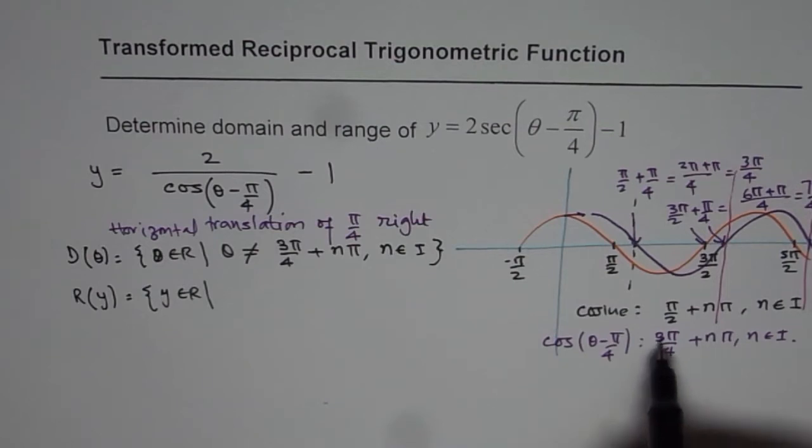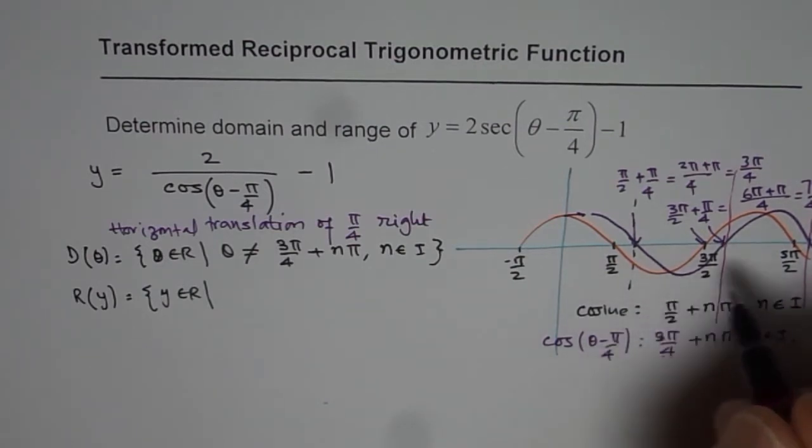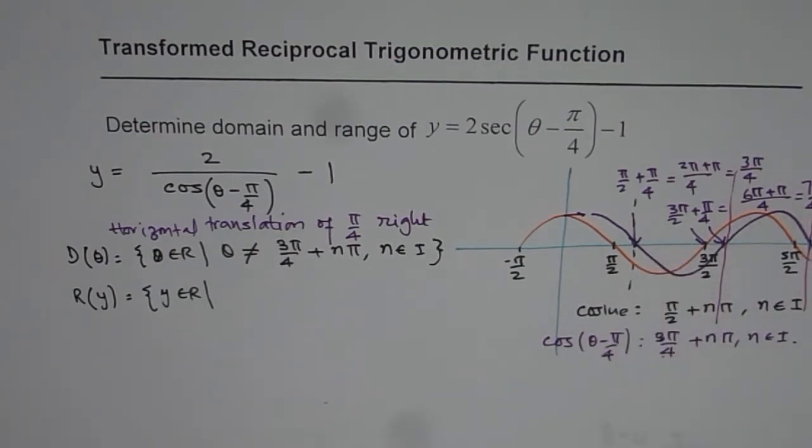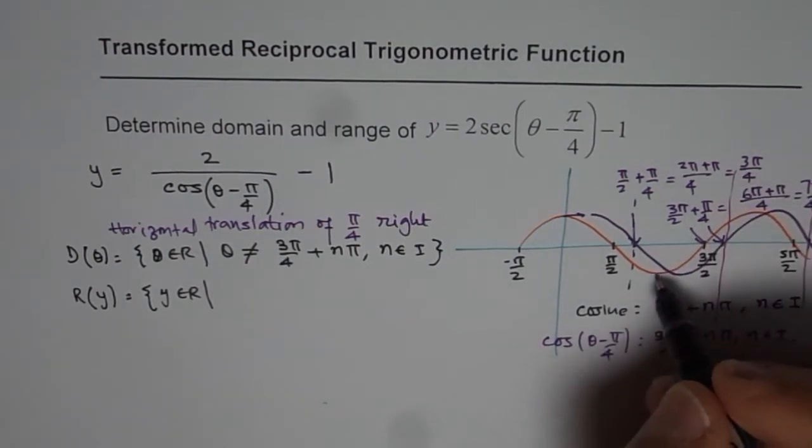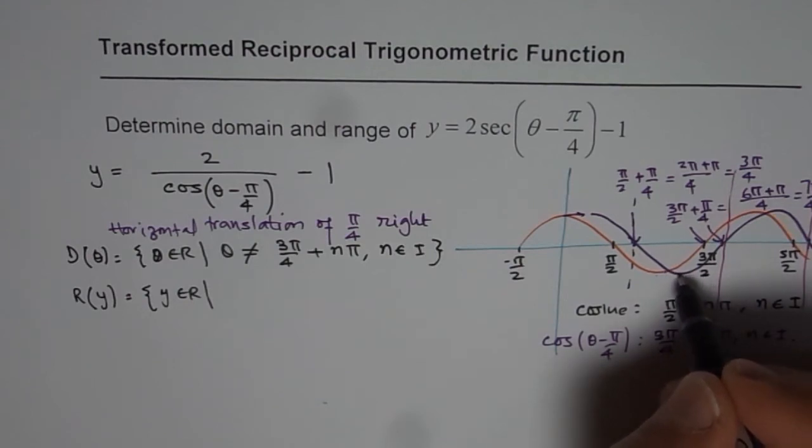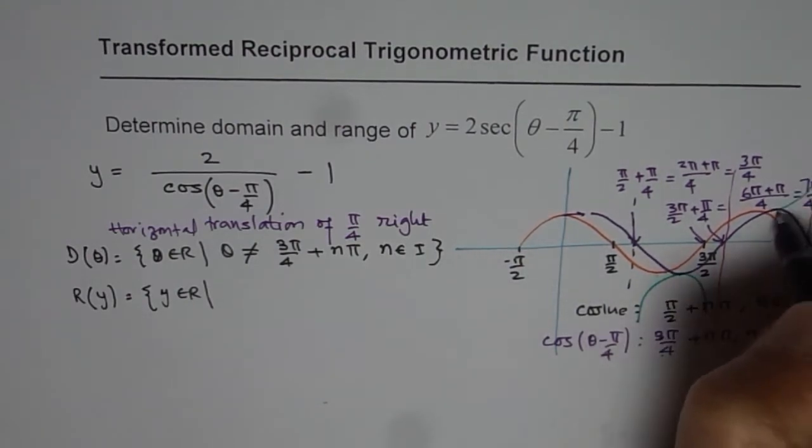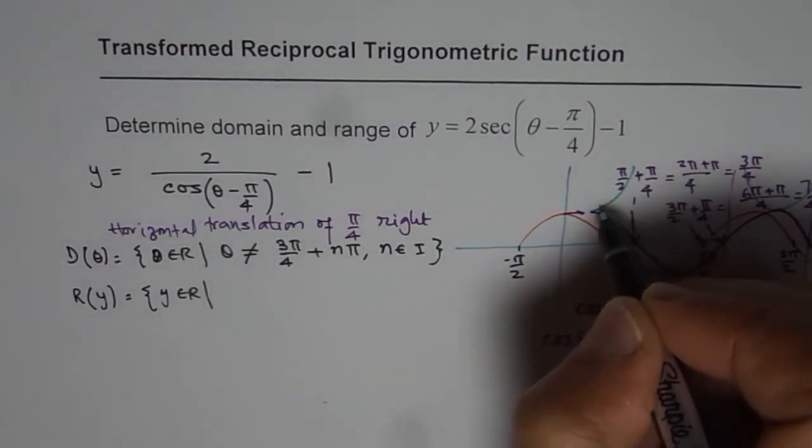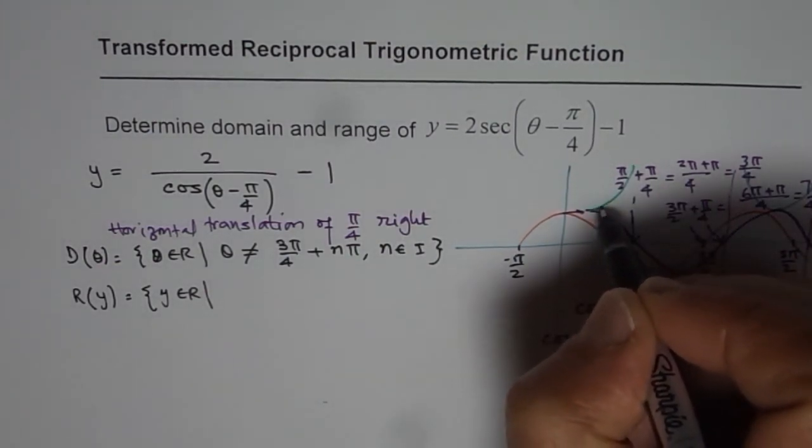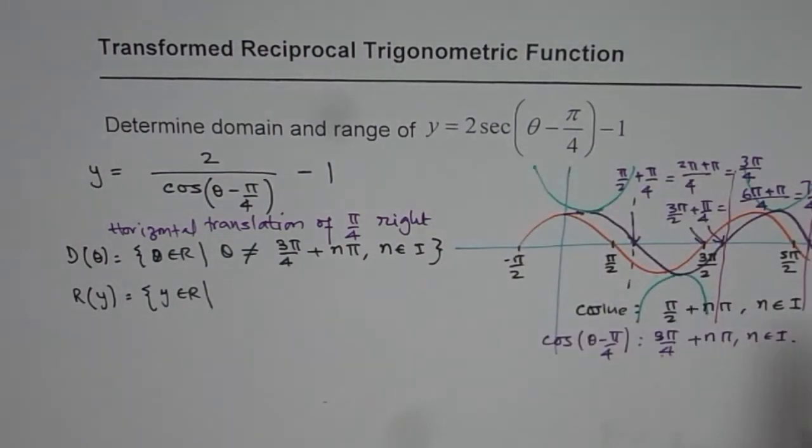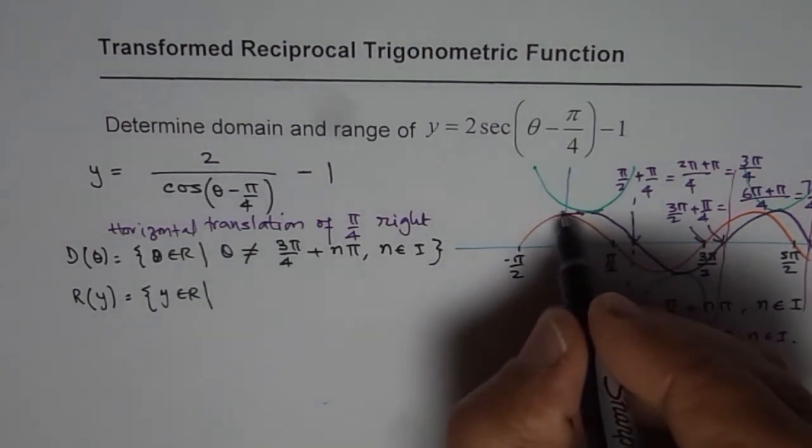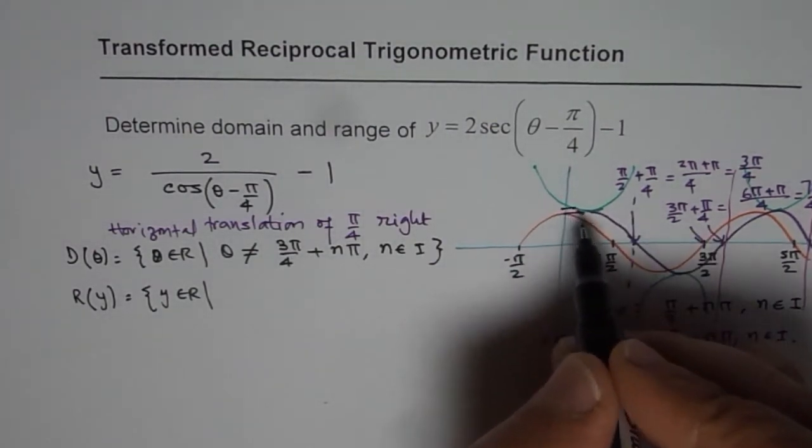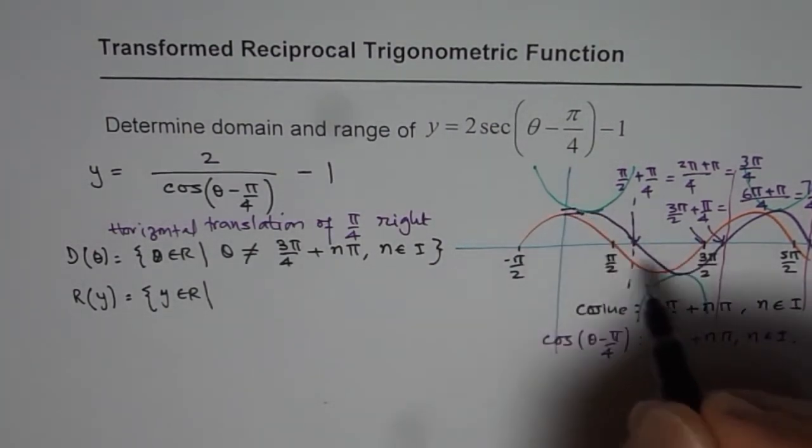But the function as such can be now sketched. As this is minus 1, it is going to be kind of like this. So that is the reciprocal or the secant. This will be kind of like this, where for the secant function it is y greater than equal to 1.